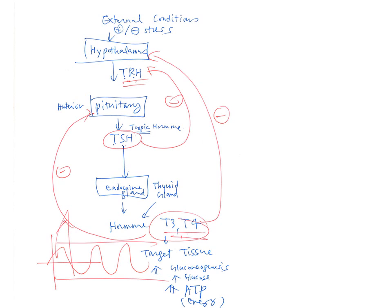Blood concentrations of T3 and T4 go to all cells of the body to increase ATP production by increasing gluconeogenesis, so that you have more glucose to burn to produce ATP. However, if you have too much T3 and T4 circulating in the blood, it will negatively feed back on TRH release by the hypothalamus and TSH release by the anterior pituitary, so that blood concentrations of T3 and T4 can be maintained within a very narrow range.